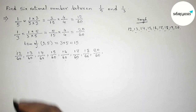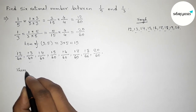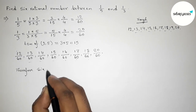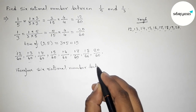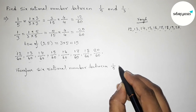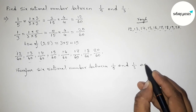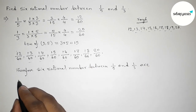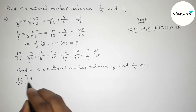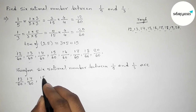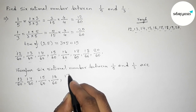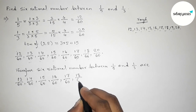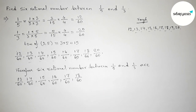Therefore, the 6 rational numbers between 1/5 and 1/3 are: 13/60, 14/60, 15/60, 16/60, 17/60, and 18/60. We can also simplify these fractions.